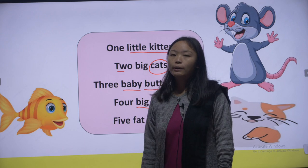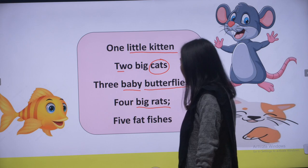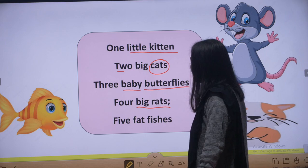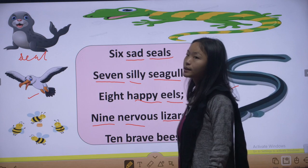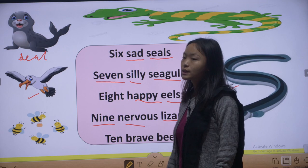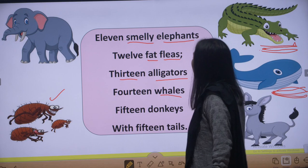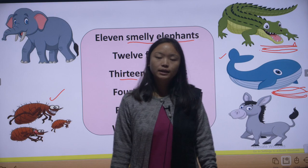One little kitten, two big cats, three baby butterflies, four big rats, five fat fishes, six sad seals, seven silly seagulls, eight happy eels, nine nervous lizards, ten brave bees, eleven smelly elephants, twelve fat fleas, thirteen alligators, fourteen whales, and fifteen donkeys with fifteen tails.